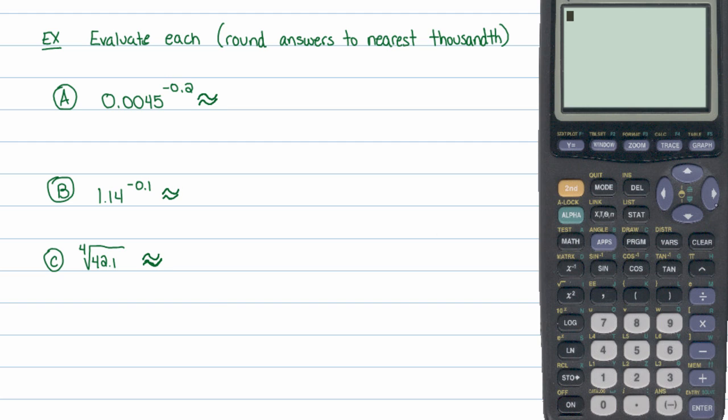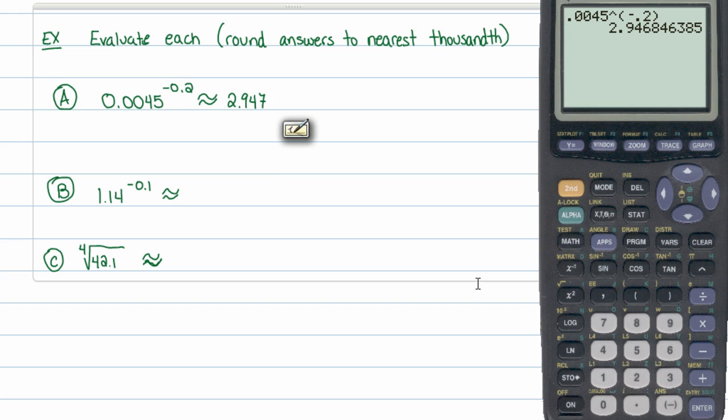So this first one, the way you do this on a, well, at least a graphing calculator is you just type in 0.0045, and then use the caret key here to raise to a power. And then because this power has a lot of things in it, has a negative sign, a zero, a decimal point, and a two, you're going to have to put a parenthesis in here. In fact, it's always a good idea when you're raising numbers to powers to use parentheses to contain the powers. And then a negative 0.2 is what I'll put here. And I'll hit enter, and I get this number. And I want to round that to the nearest thousandth. So that's 2.947.